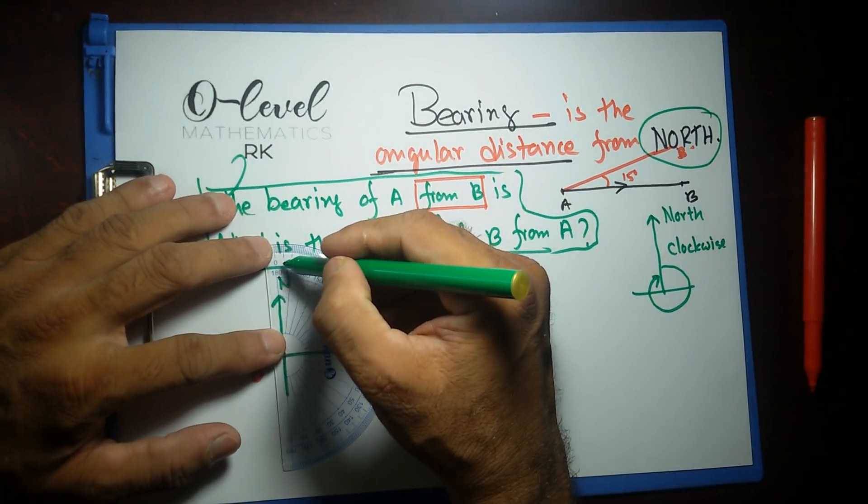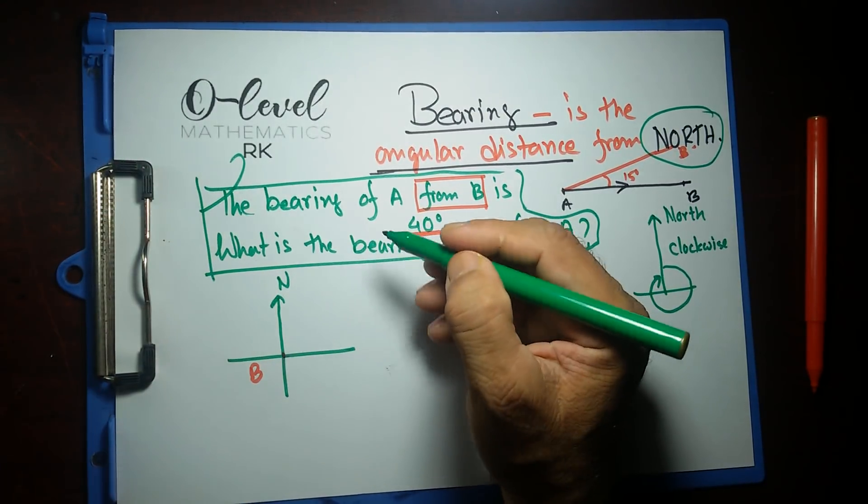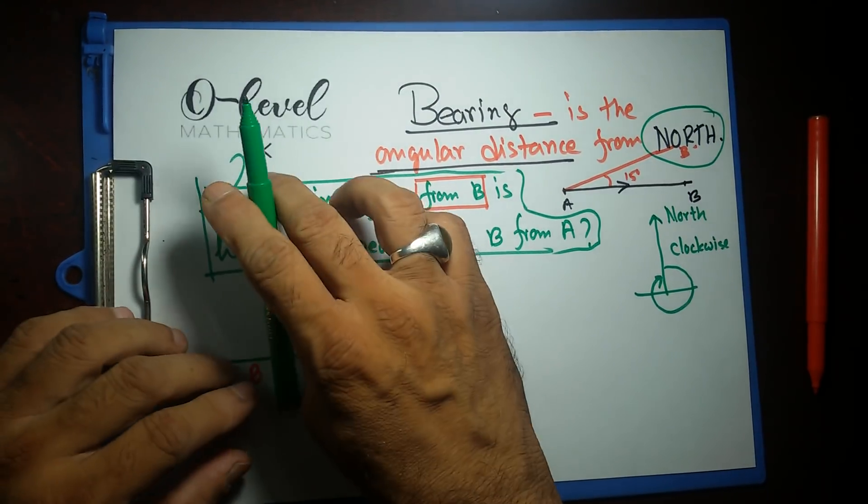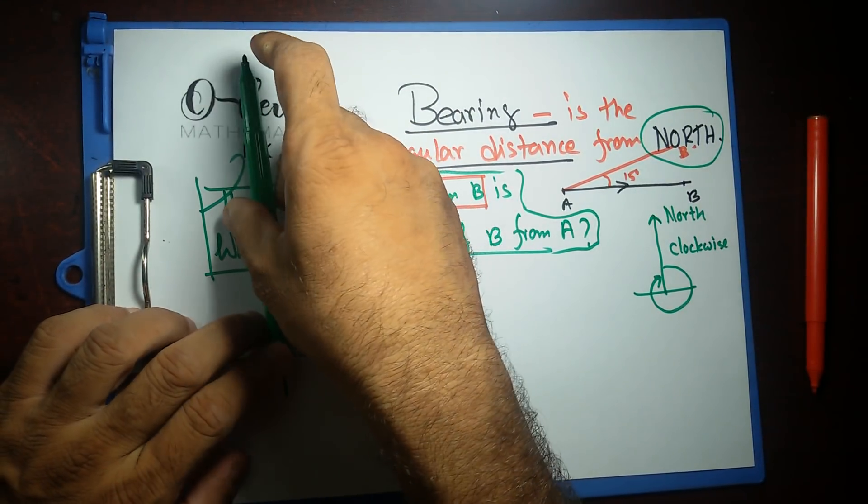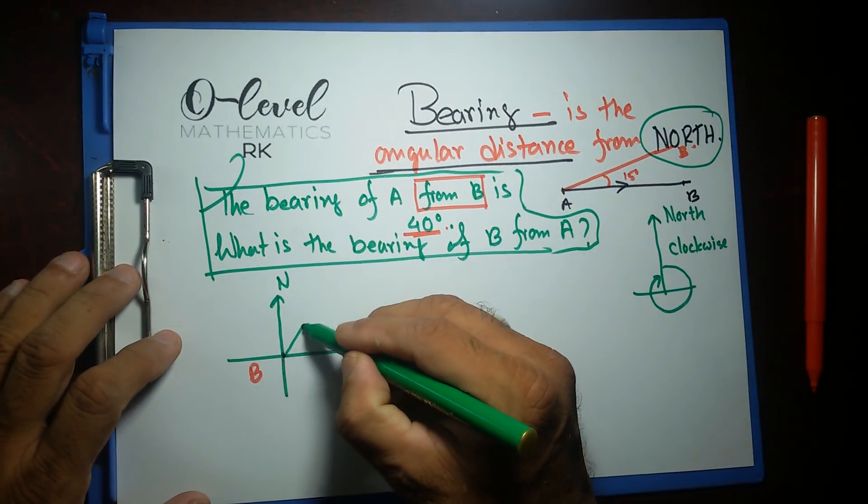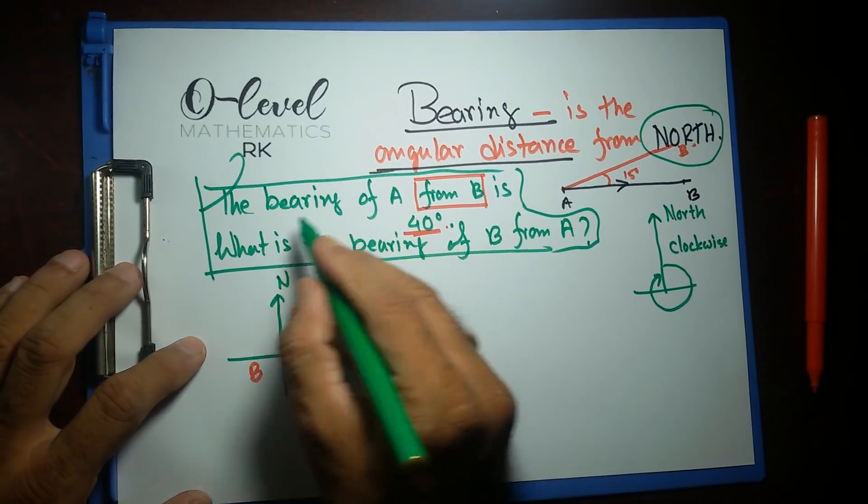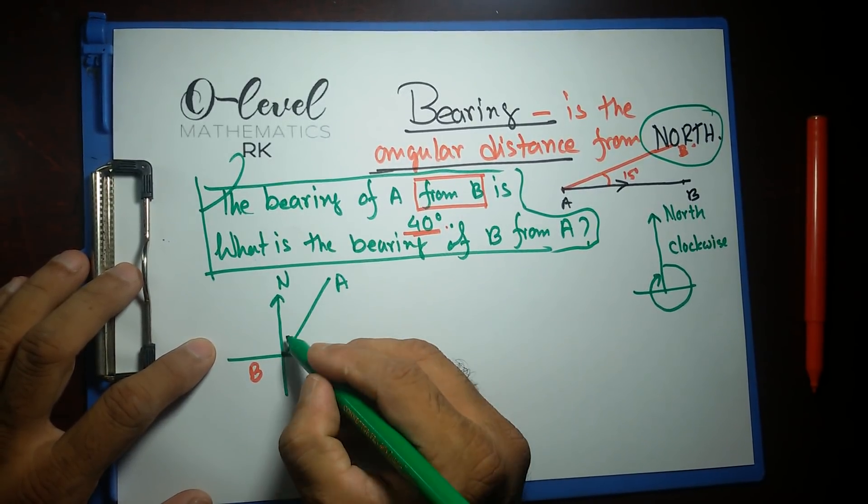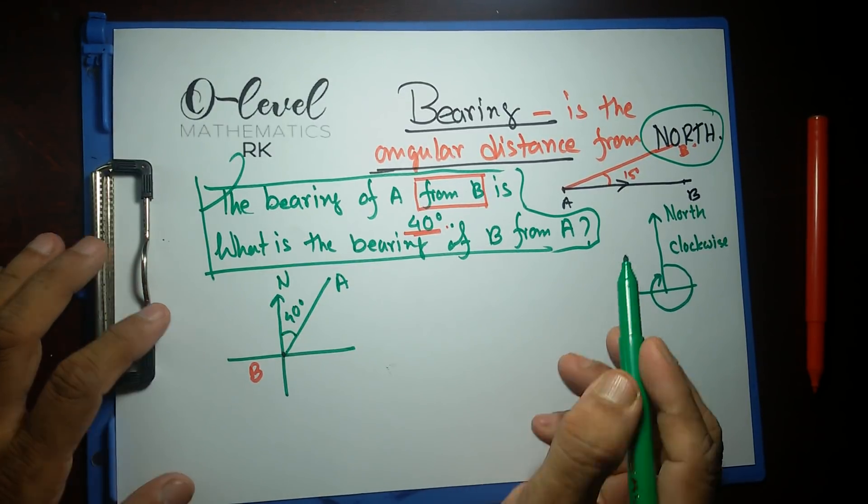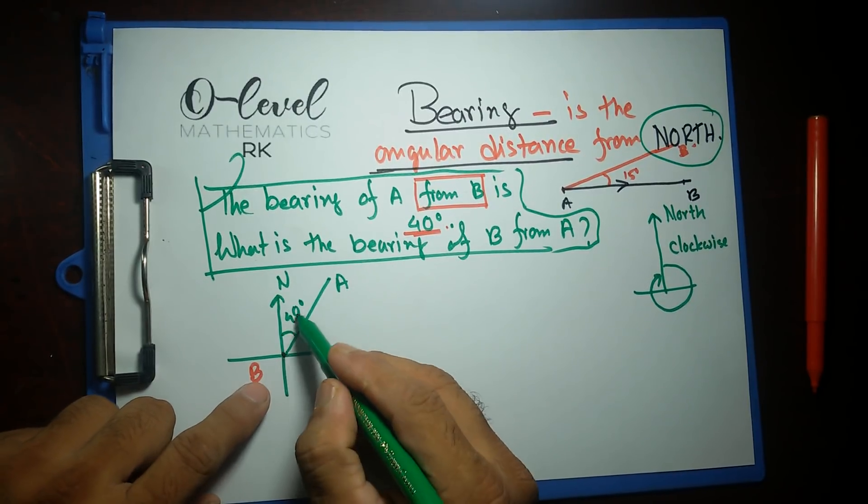So A is angular distance from north of B, 40 degrees. That's what bearing is. If you take the protractor and place it over here, you can find 0, 10, 20, 30, 40—40 is somewhere over here. But most of the time we're gonna do calculations, so we don't need a geometry box. But from this north, if you just move 40 degrees clockwise, somewhere over here is gonna be our A. The bearing of A from B is this 40 degrees. That's what the first line is saying. The angular distance of A from B is 40 degrees.